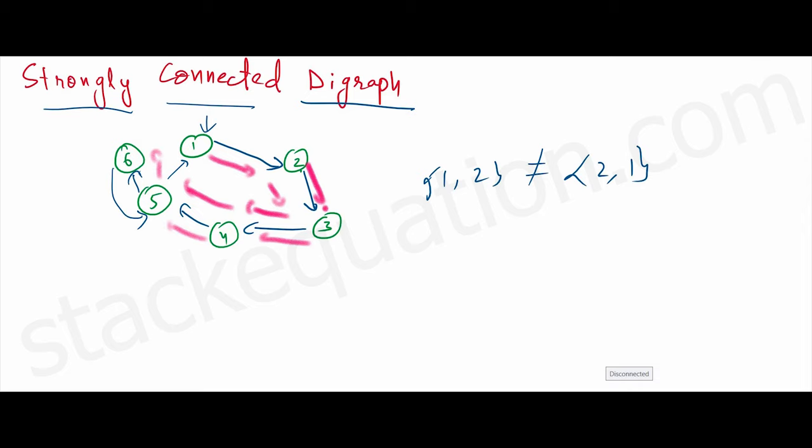For any two vertices, there exists a path between them. Such a graph is called a strongly connected graph. Because we have directions from one vertex to the next, we call it a digraph - that is, a directional graph - and a strongly connected digraph.